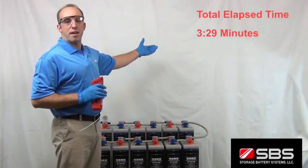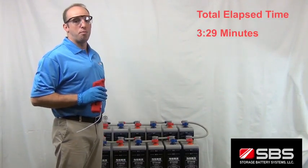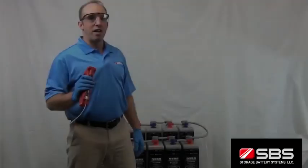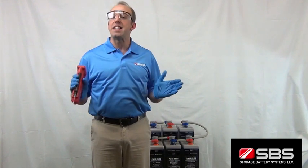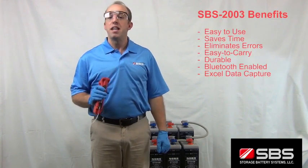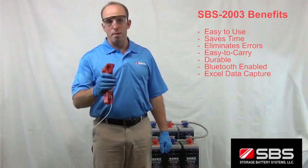Here is the time with the SBS 2003. It's more accurate and it's much faster. You can clearly see that the SBS 2003 digital hydrometer is easy to use, saves time, eliminates errors and is easy to carry and durable.